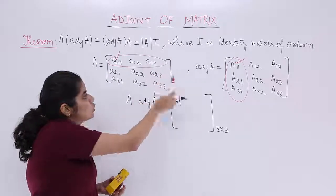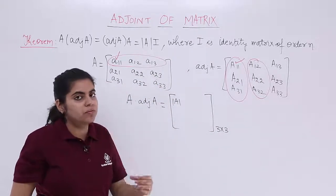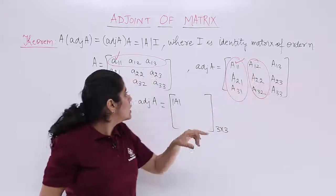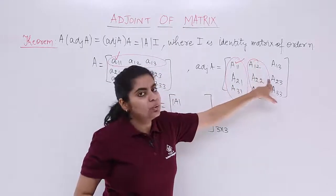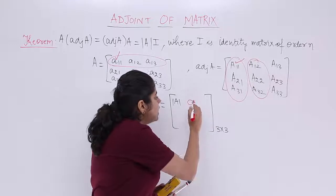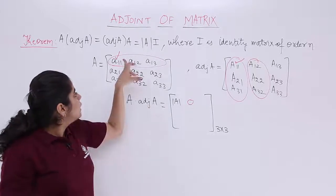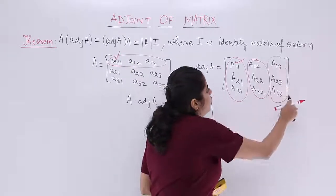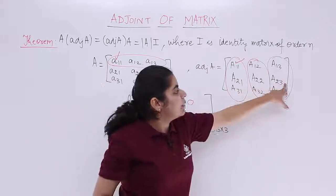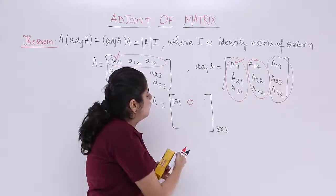For the first row and second column: a11·A12 = 0, a12·A22 = 0, and a13·A32 = 0, so this position gives 0. Similarly, for the first row and third column: a11·A13 = 0, a12·A23 = 0, a13·A33 = 0 — again giving 0. We get determinant of A only for the diagonal positions: A11×A11, A22×A22, and A33×A33.